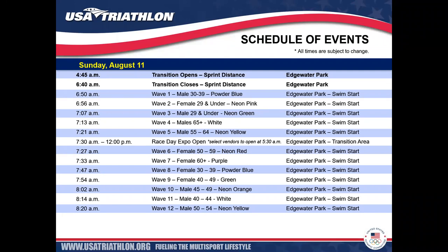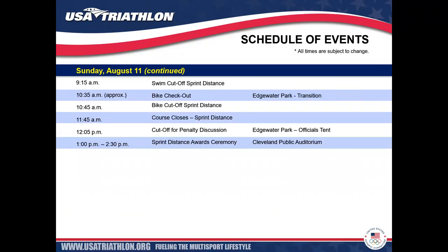The race day expo will also be open on Sunday for sprint distance races. Cutoff times: the bike cutoff is 10:45 a.m., with bike checkout anticipated shortly after. If only a handful of athletes remain on course, we will allow early bike checkout without affecting those still racing. The full course closes at 11:45 a.m. The penalty discussion tent will be at Edgewater Park just east of the expo area. Sprint distance awards are from 1:00 to 2:30 p.m.